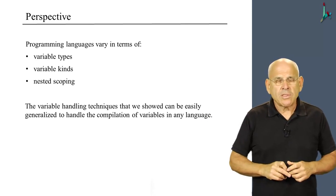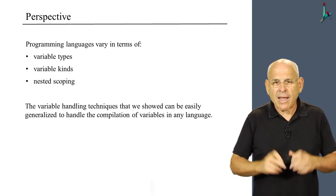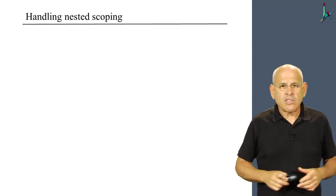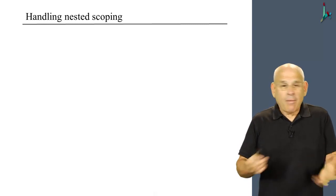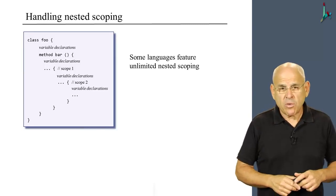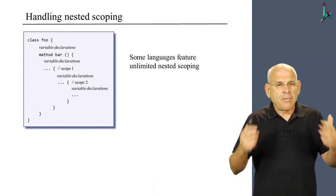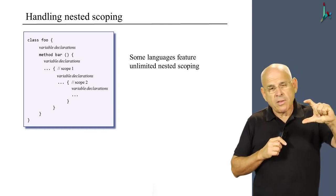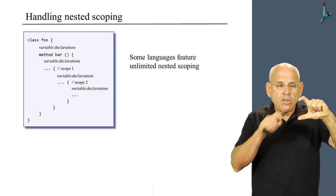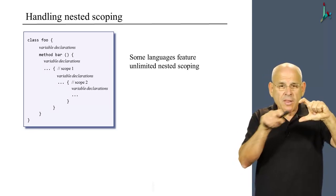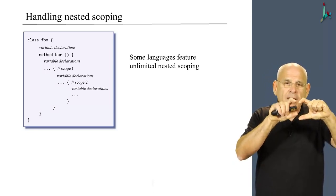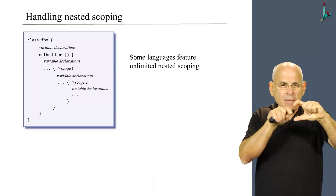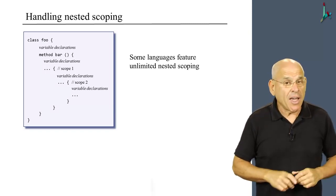The nested scoping rules are somewhat more involved, and I'd like to say a few words about them. Now, I'd like to say a few words about what is nested scoping to begin with. Well, some languages, of which Java is a good example, feature unlimited scoping. And this means that whenever you define a block of code with a pair of curly brackets, you can define variables within this code which are recognized only within that block.